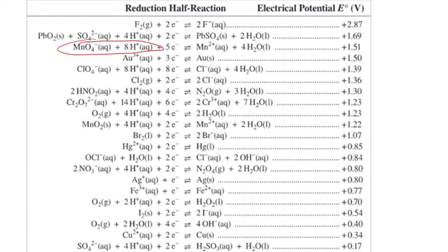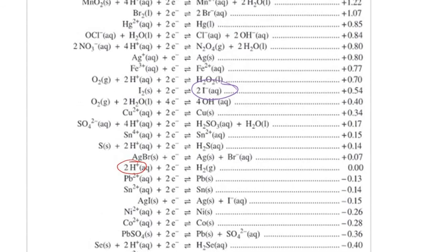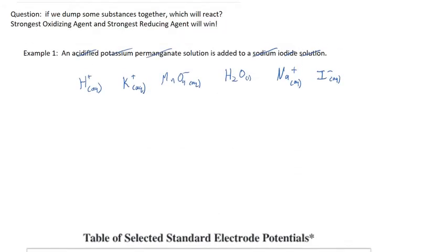On the reducing-agent side of the table, the first one to notice is the iodide ion (I⁻). Continuing to skim the list, we also find water as a reducing agent near the top. After thoroughly looking through the list, we can now list what each species is: H⁺, K⁺, permanganate with H⁺, water, and Na⁺ are possible oxidizing agents; water and iodide are possible reducing agents.